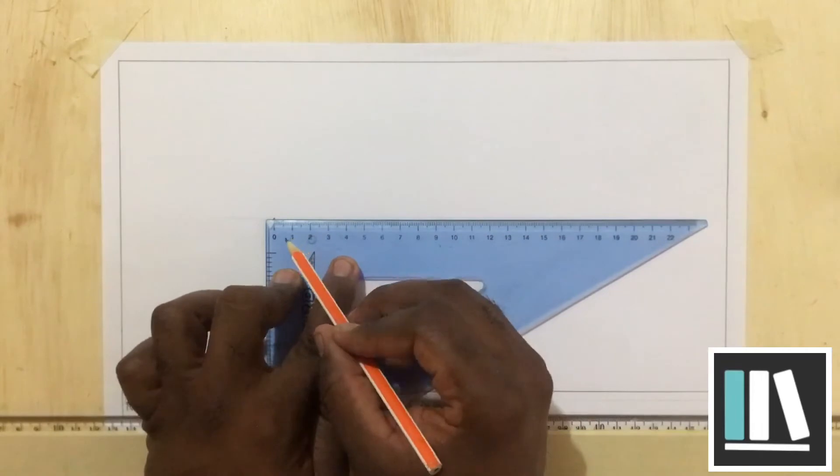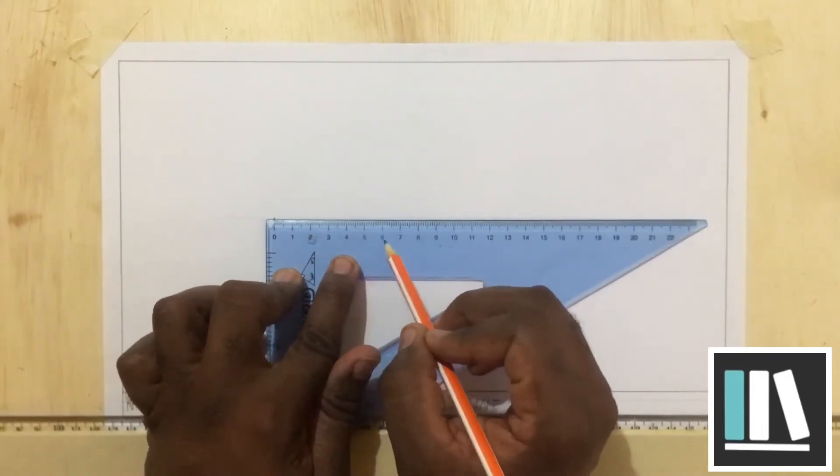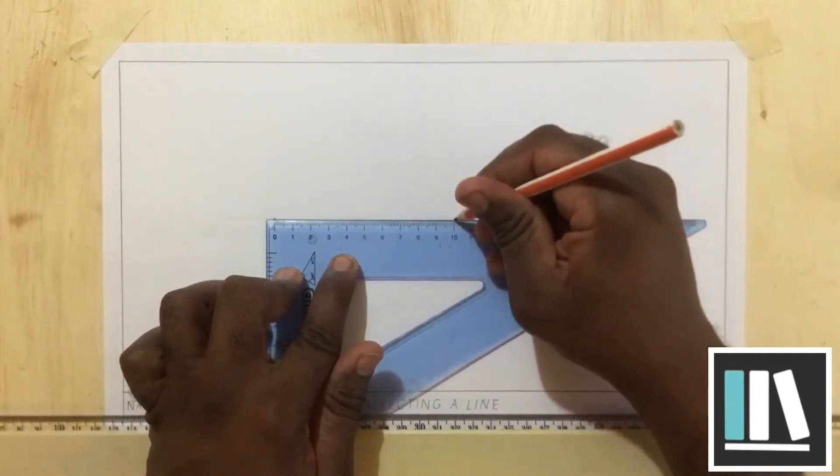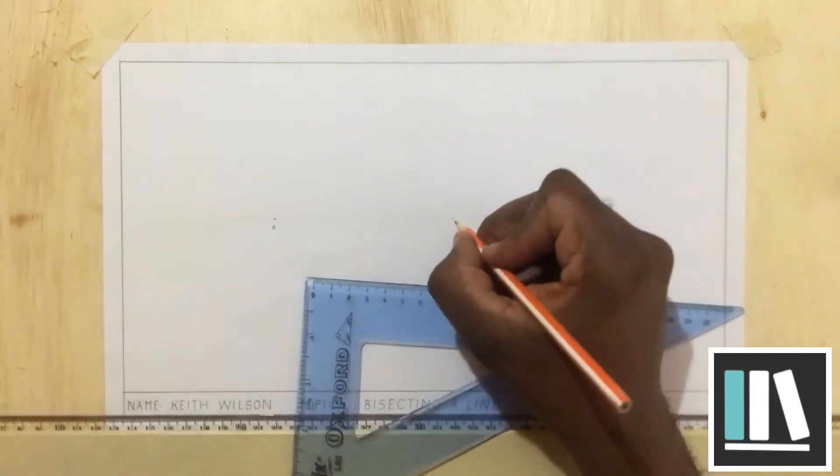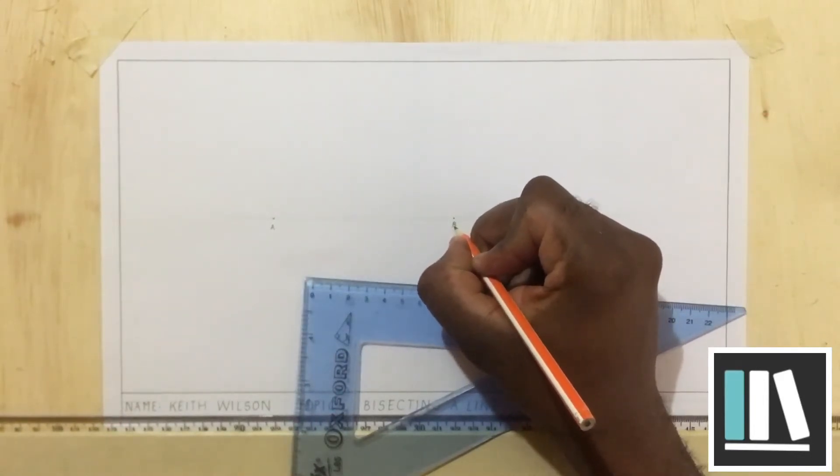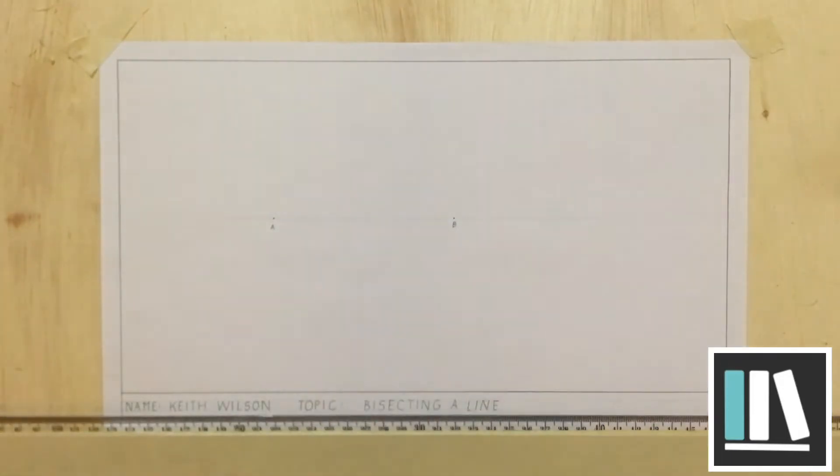I am going to now go ahead and find 100 millimeters or 10 centimeters on the ruler. So, 10, 20, 30, 40, 50, 60, 70, 80, 90, 100. 100 millimeters. Right at that mark, I am going to put another point. This point will be called point B. I am going to label it as such.